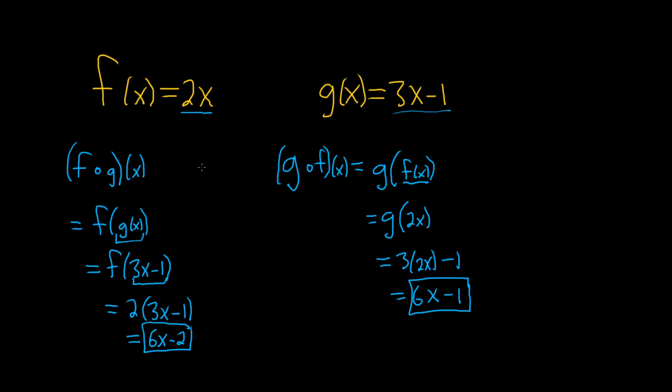Notice they're not the same. So these are not equal to each other. And so in general, that's often the case. The composition of f∘g is not the same as g∘f. So the operation of composition is not commutative. I hope this video has been helpful.